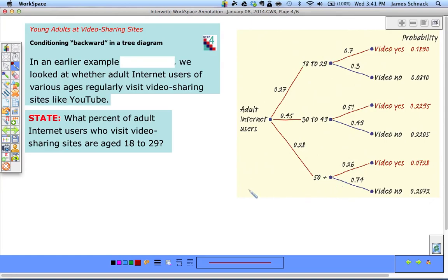What percent of Internet users who visit video sharing sites are aged 18 to 29? Let's translate this into a conditional probability statement. This is asking us: we know they visit video sites, so what's the probability that they're 18 to 29 given that they said video yes? Our conditional probability formula says this is probability of 18 to 29 and video yes divided by the probability of video yes.